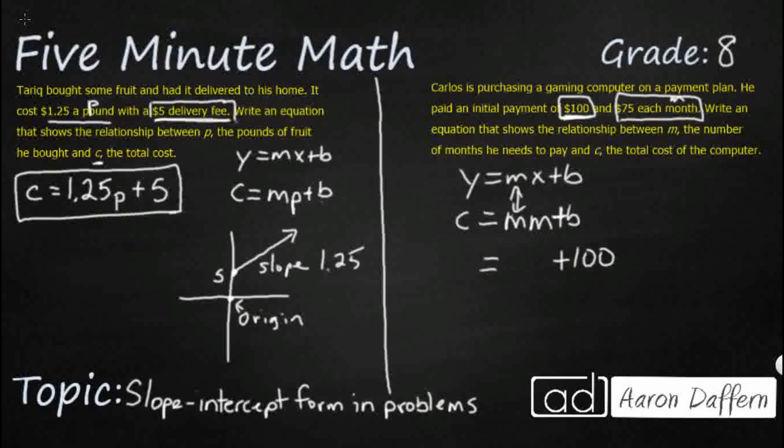After five months, it's still $100. After 10 months, it's still $100. So it's $75 a month. So that's going to be our slope. So $75 per month. So we're going to kind of replace this slope with that $75. And then my total cost is C. So $75 a month plus that initial $100.